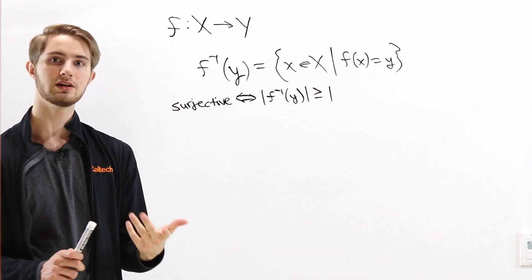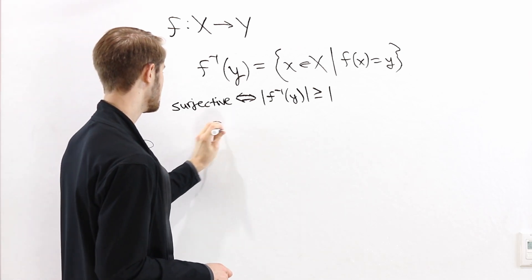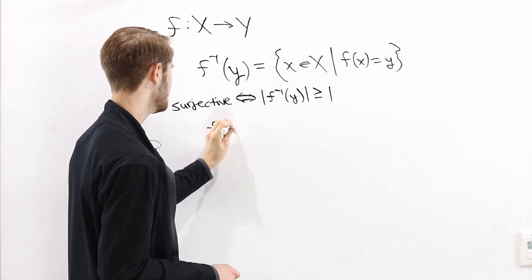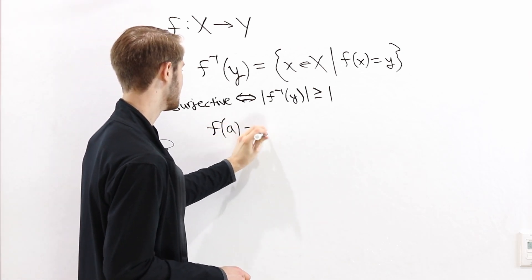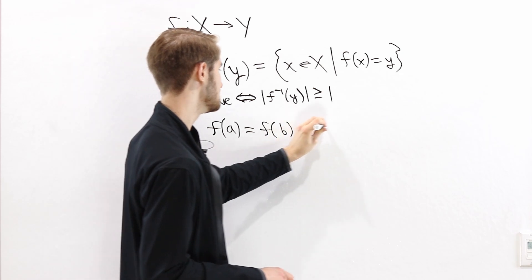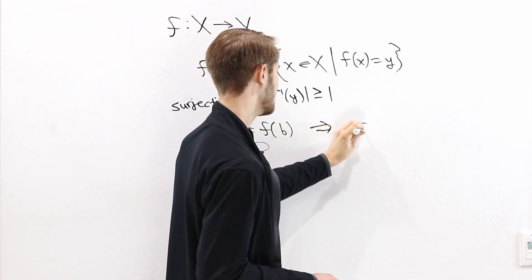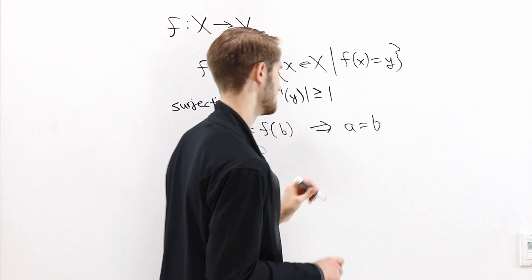So now let's look at functions being injective. The definition of a function being injective is that if f of a equals f of b, that always implies a equals b.